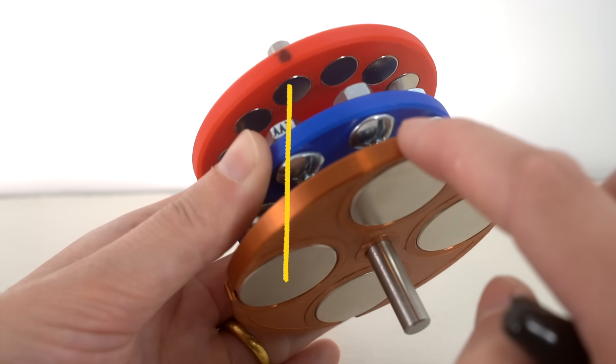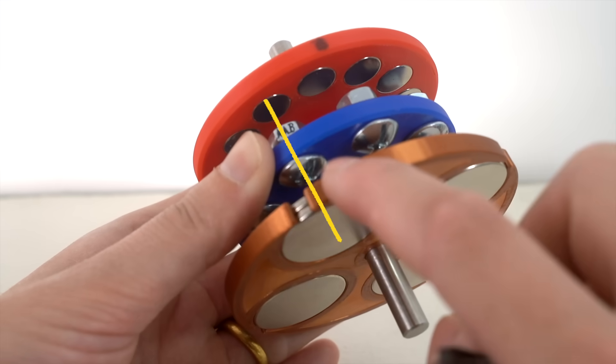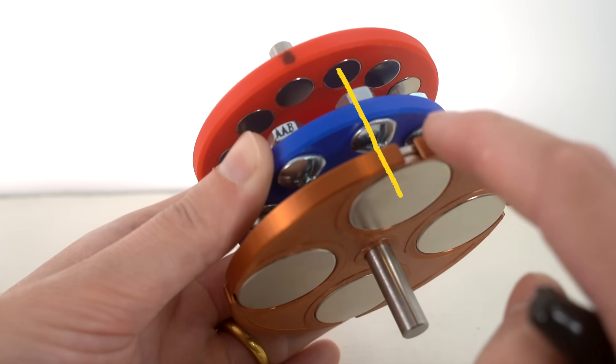So basically we have the aligned and the ones that want to be aligned. And here you can see it just keeps repeating. Pretty crazy, right?